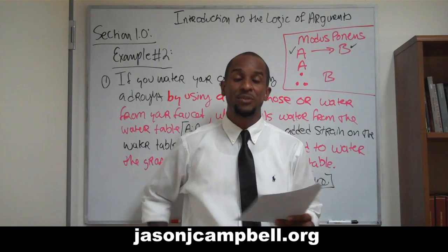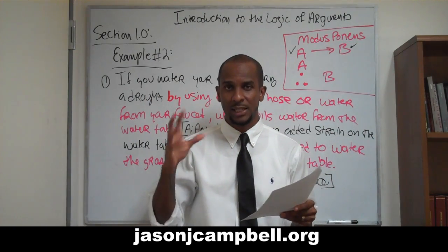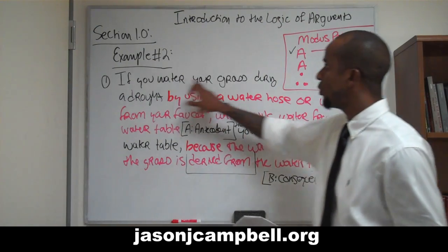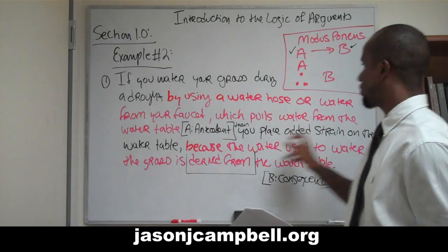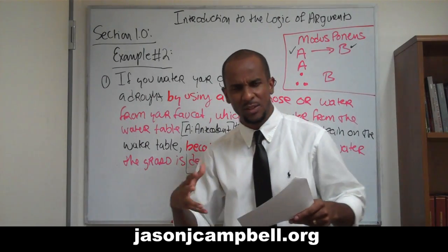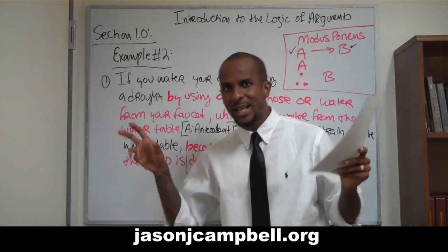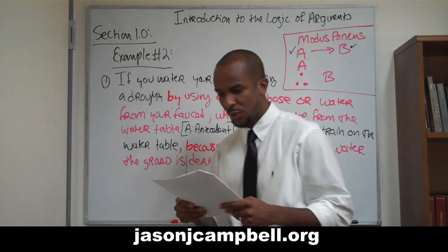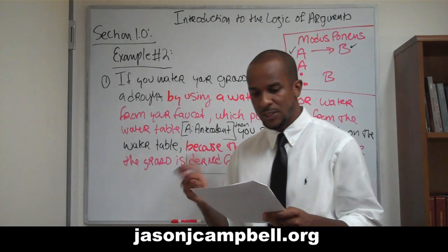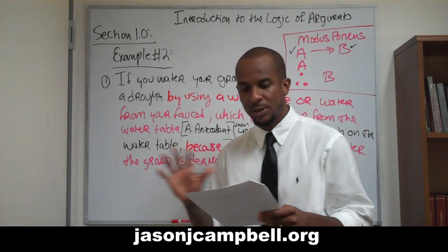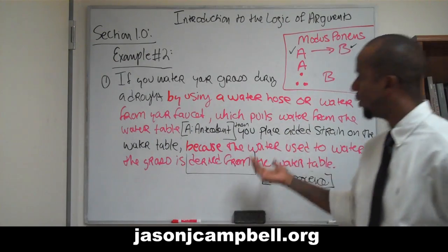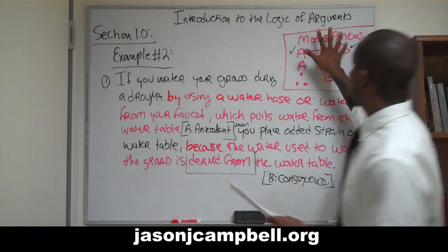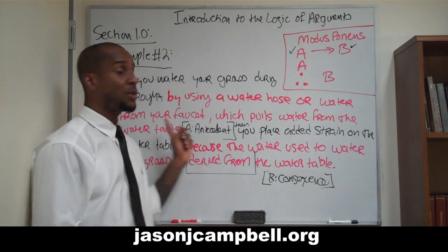So the second example is merely fleshed out — I'm keeping this very introductory. What I've done in example number two is take the original example embedded in it: 'If you water your grass during the drought, then you place added strain on the water table.' I've just fleshed that out by giving you more explanation on what I mean by that. The second example is fleshed out via the linguistic use of clauses and content information, while preserving the integrity of modus ponens generally. Any good logician can look at this argument and say, oh, this person used modus ponens.